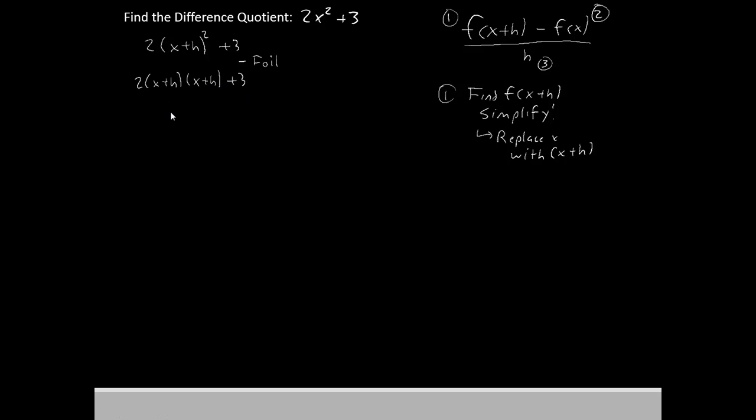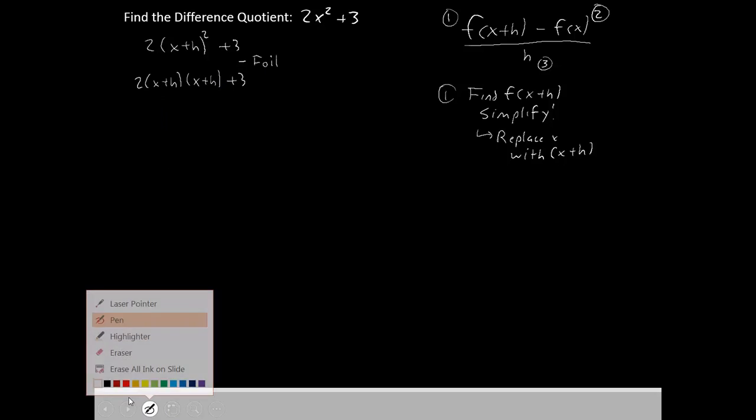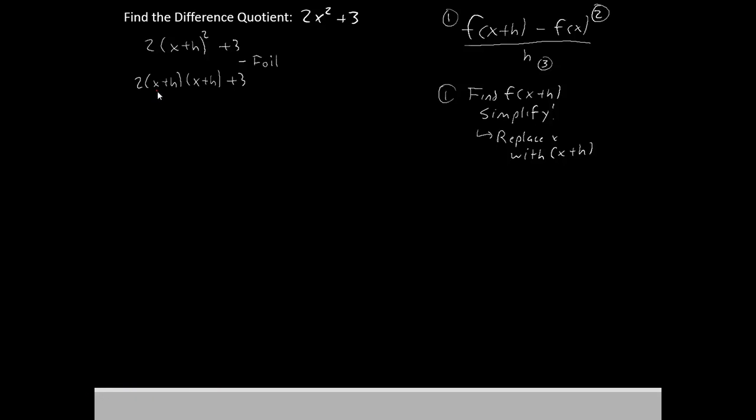And now I'll go ahead and foil it. So I will multiply the x times the x, the x times the h, the h times the x, and the h times the h. I'm going to leave the 2 on the outside though.